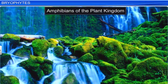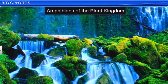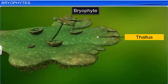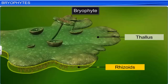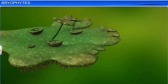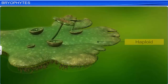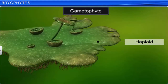They are also called amphibians of the plant kingdom, because though bryophytes grow in soil, they need a moist habitat for sexual reproduction. The plant body is thallus-like and is either prostrate or erect. It is attached to the substratum by unicellular or multicellular rhizoids. The plant body does not have true roots, stem, or leaves, but possesses similar structures. The main plant body of a bryophyte is haploid. It is also called a gametophyte, as it produces gametes.